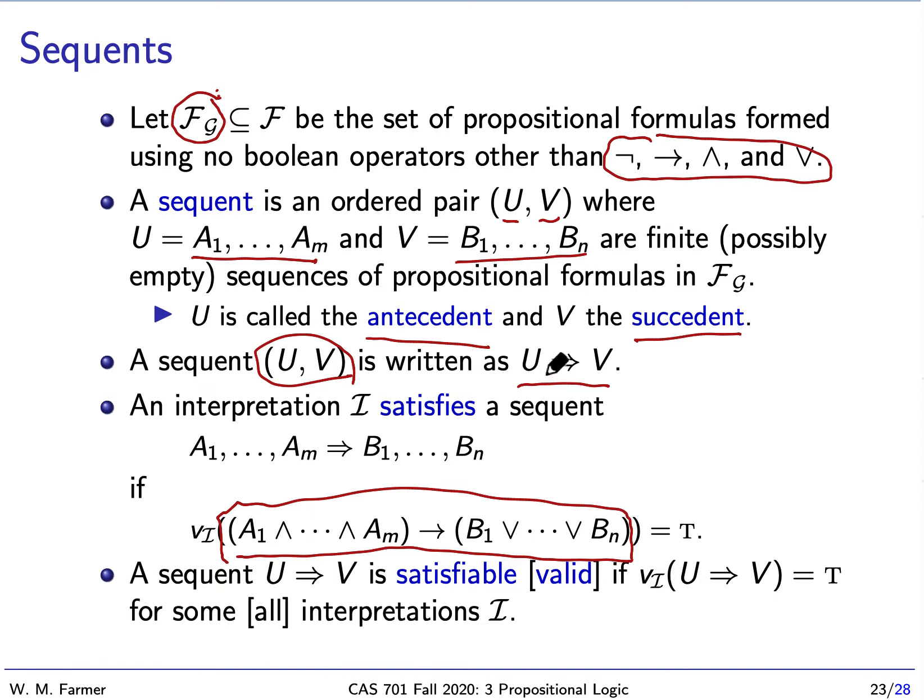Another way of saying this is that a sequent is a shorthand for writing this formula. We want to think of u as a set of assumptions and v as a set of conclusions. The sequent says that the conjunction of the assumptions in u implies the disjunction of the conclusions in v. A sequent is satisfiable if there's an interpretation that makes it true, and it's valid if all interpretations make it true.